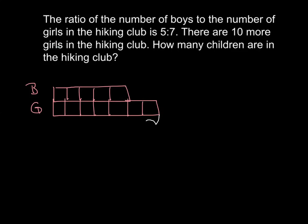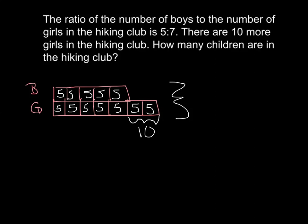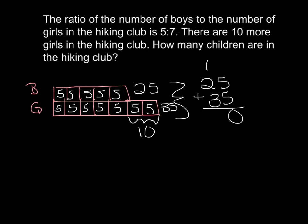There are 10 more girls in the hiking club. That means the 2 extra pieces represent the 10 extra girls, which means each piece equals 5. So every piece in our bar model equals 5. Now we can answer the question: how many children are in the hiking club? If every piece equals 5 and there are 5 pieces for the boys, that means there are 25 boys, and there would be 35 girls. Add them together: 25 plus 35 equals 60. So there are 60 children in the hiking club.